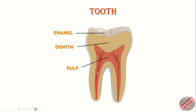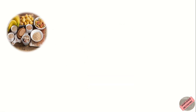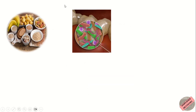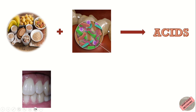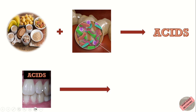When we consume sugary or carbohydrate-rich foods, bacteria in our mouth break down these substances and produce acids as by-products. These acids, along with the bacteria, form a sticky film called plaque that adheres to the teeth. The acids attack the enamel, causing it to lose minerals and weaken. Over time, the enamel structure becomes compromised and small holes or openings known as cavities develop.